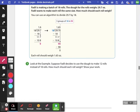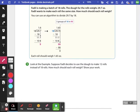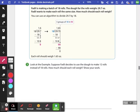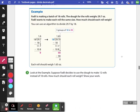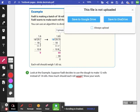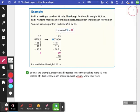Number 1 – look at the example. Suppose Fadil decides to use the dough to make 12 rolls instead of 18. How much should each roll weigh? So we're talking about weight here and one mistake I could see people making is just taking the 12 and the 18 and trying to subtract those, but it says look at the example.